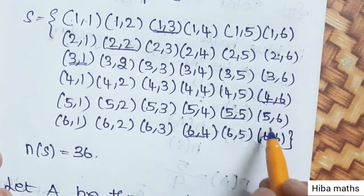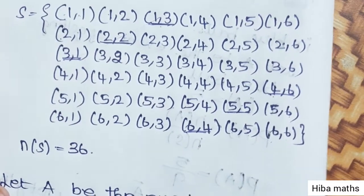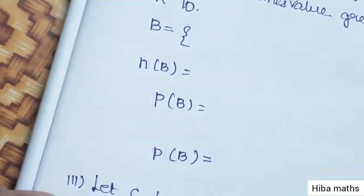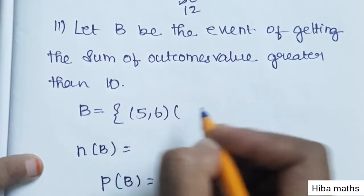So we need sums greater than 10. The outcomes are: (5,6), (6,5),